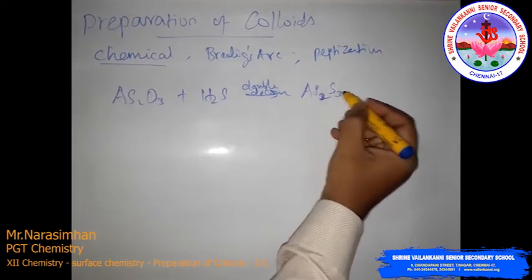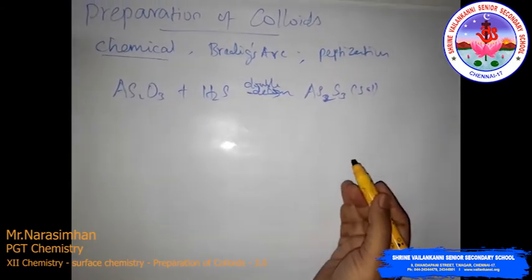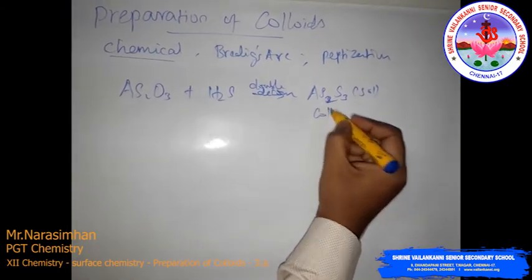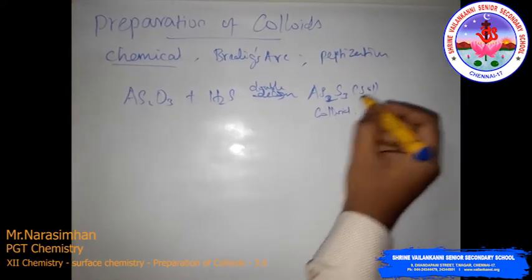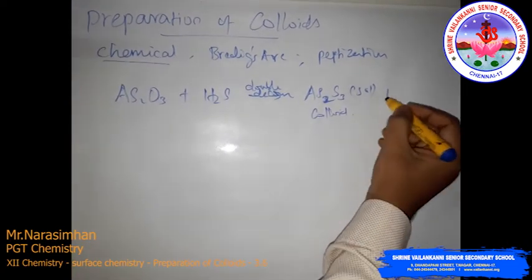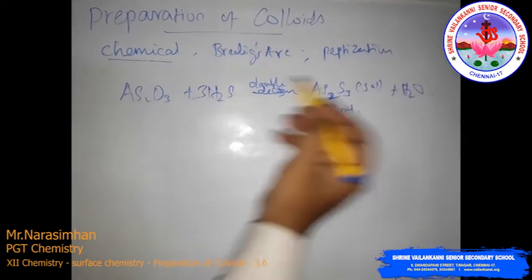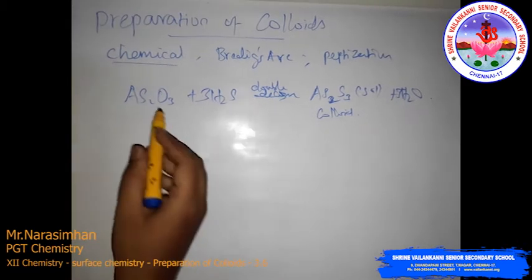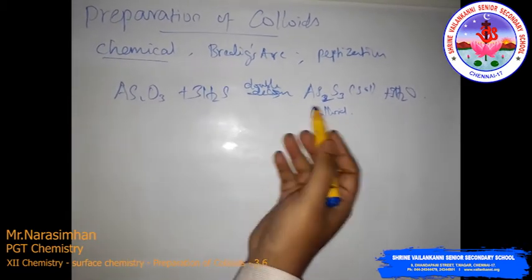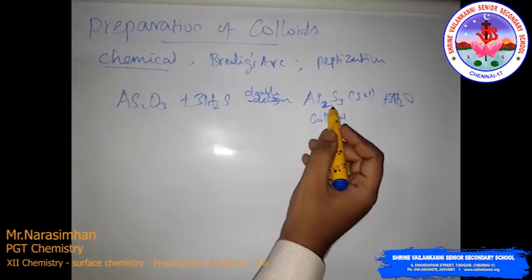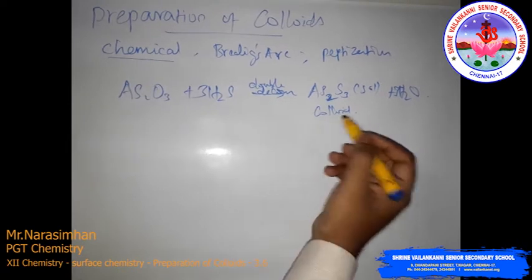The product is AS2S3 — arsenious sulfide salt. This is a colloid, yellow in color. So arsenious oxide reacts with hydrogen sulfide gas and undergoes a double decomposition reaction to produce arsenious sulfide, which is a yellow-colored colloid.